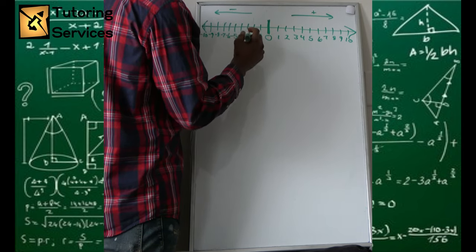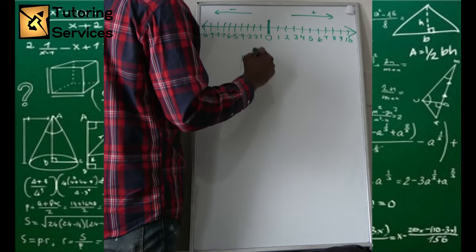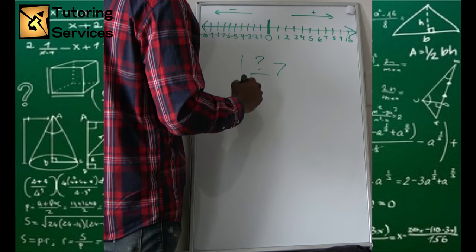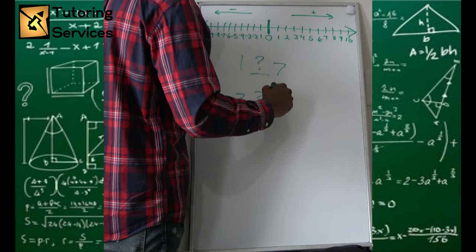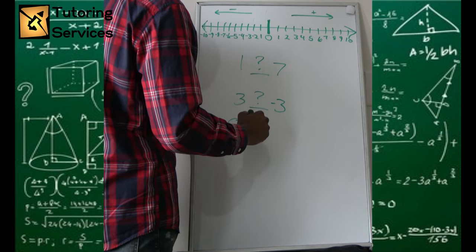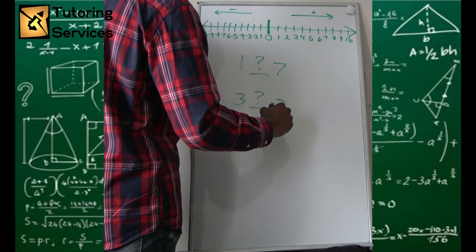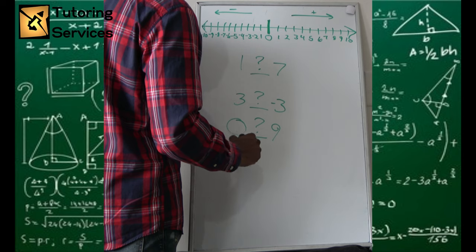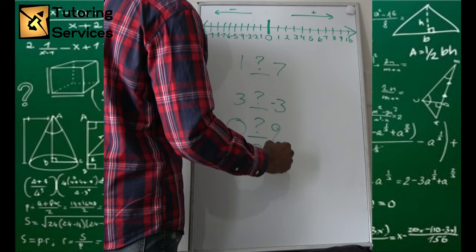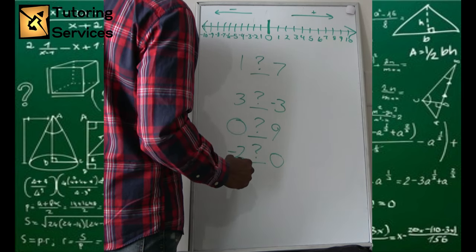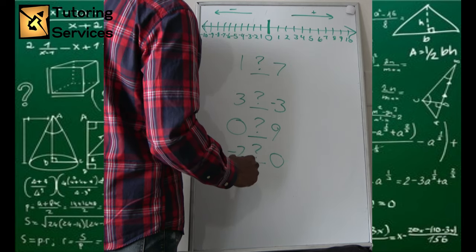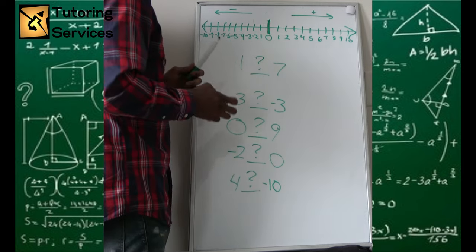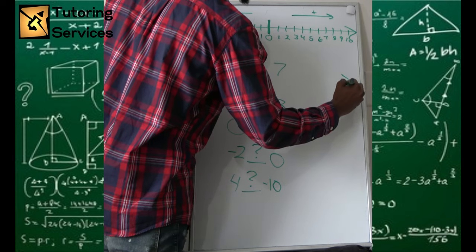Let's set up some numbers. We'll say: one is what to seven; three is what to negative three; zero is what to nine; negative two is what to zero; and four is what to negative ten. We're dealing with greater than, less than, or equal to — and of course we also have greater than or equal to and less than or equal to.